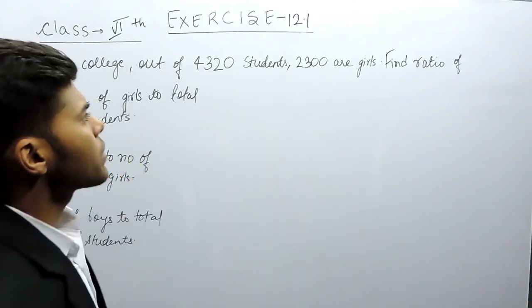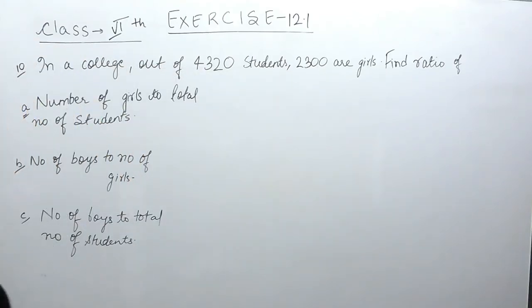Hello everyone, this is the tenth question of Exercise 12.1. The question says that in a college out of 4320 students, 2300 are girls. Find the ratio of the number of girls to total number of students, number of boys to number of girls, and number of boys to total number of students.